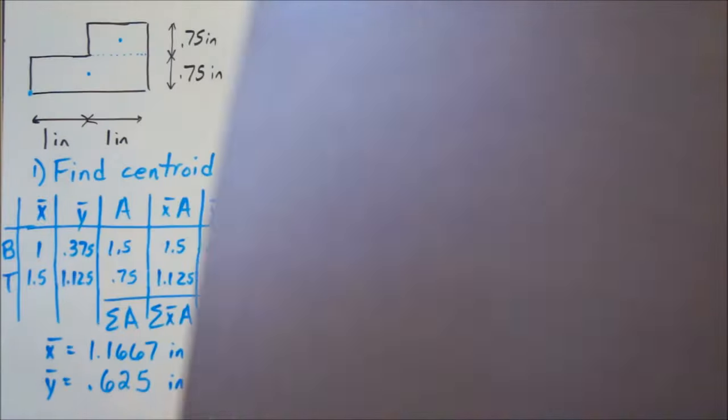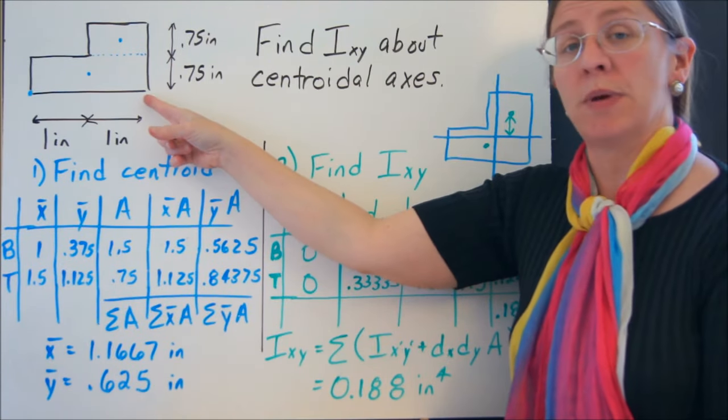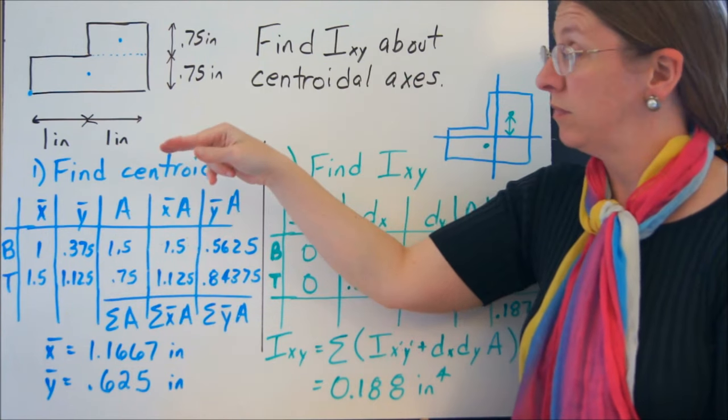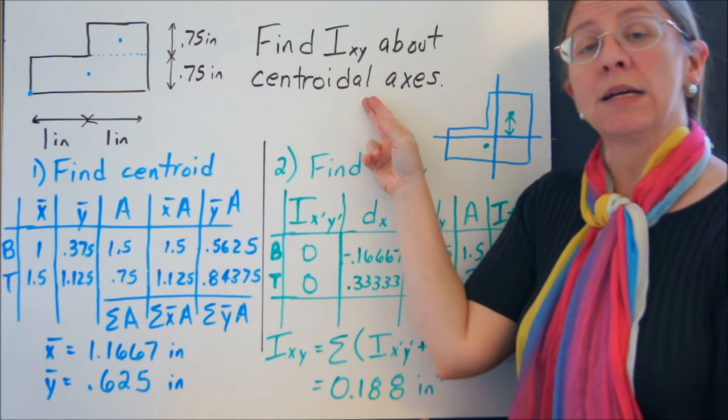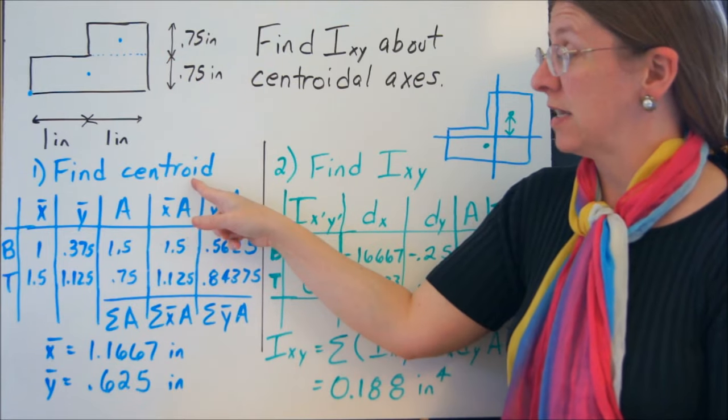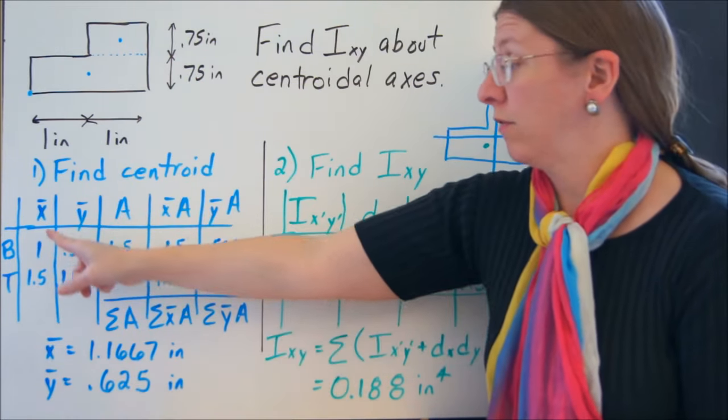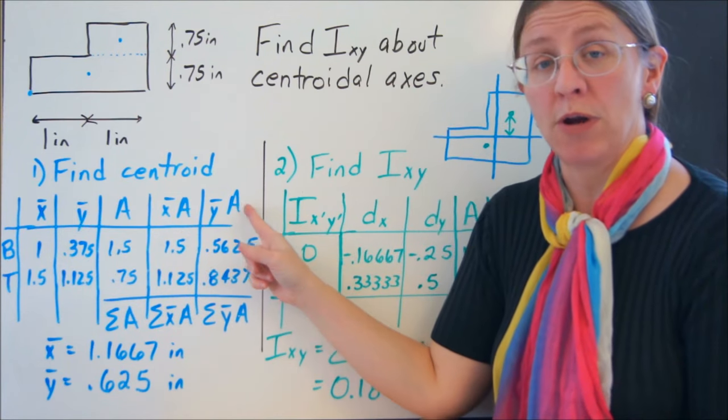So if we look at an example, this is the kind of problem you're going to end up with. This is an asymmetric beam that we just looked at. If I want to find Ixy about the centroidal axis of these things, the first thing you have to do is find the centroid of that thing. So this is the chart we had before. We have x bar, y bar, A, x bar A, and y bar A.